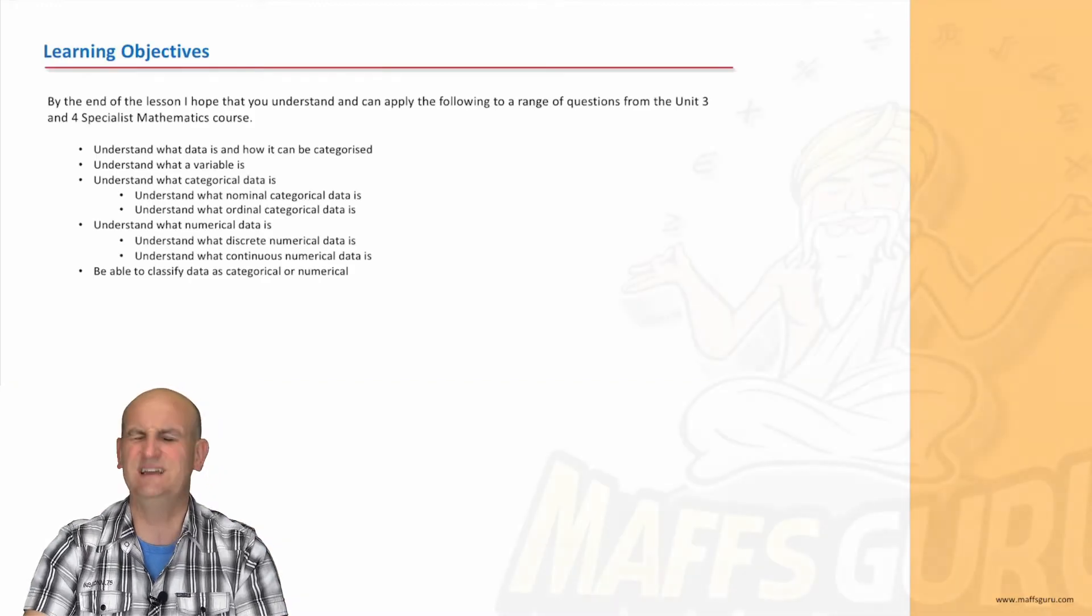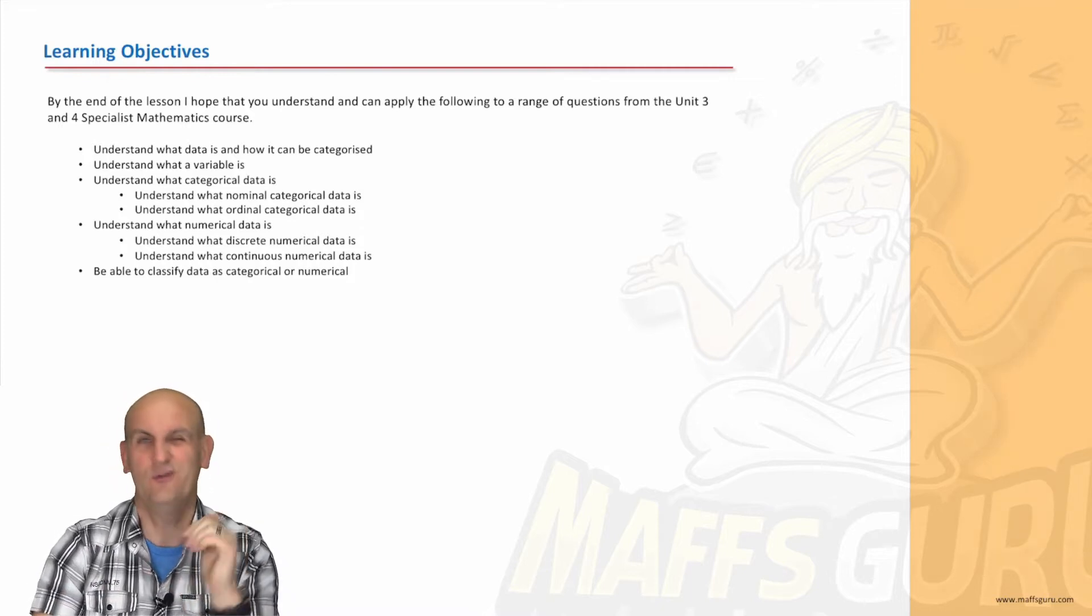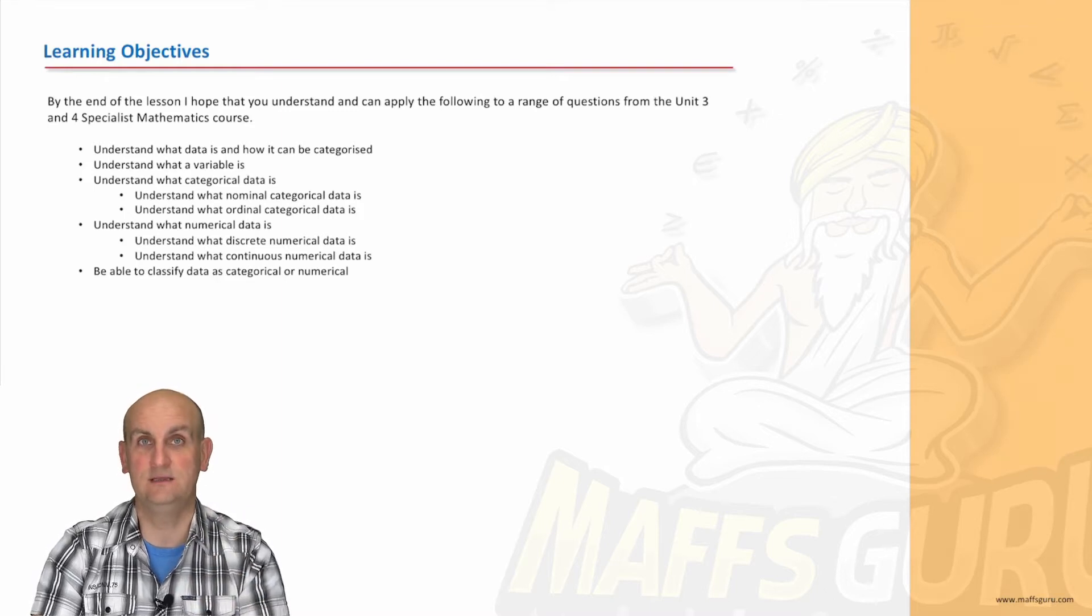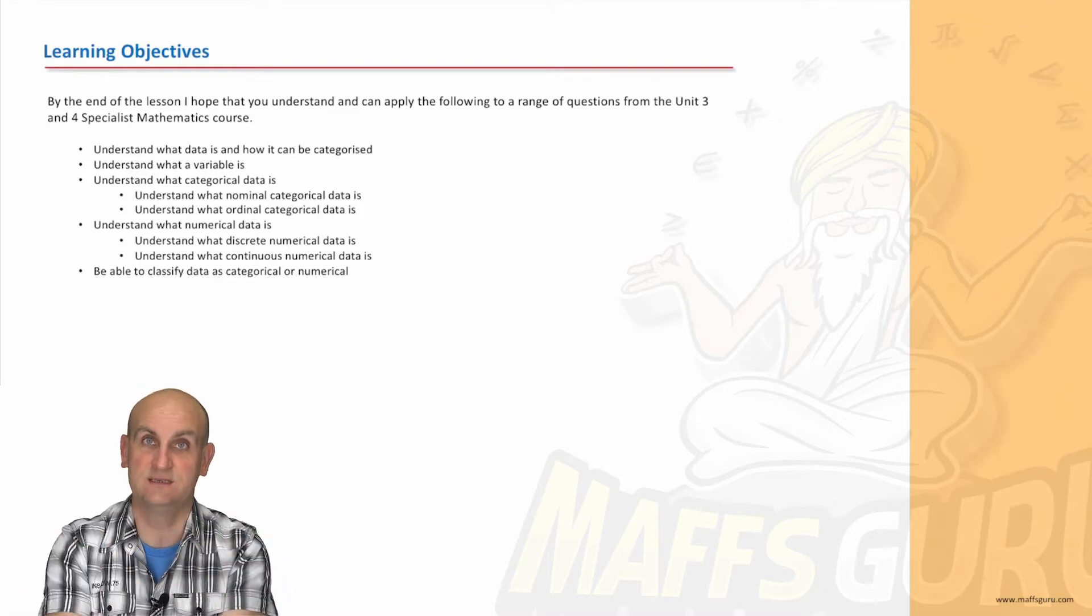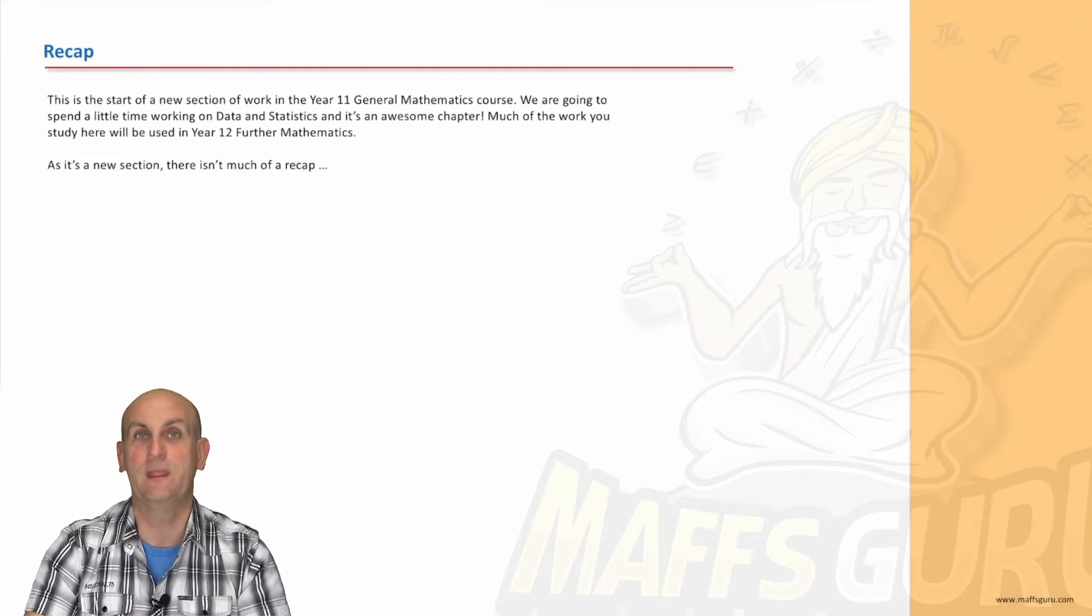What are we doing today? Our learning objective is to understand what data is and how it can be categorized. We're going to look at what a variable is and also a constant, and then the idea of what categorical data is and what numerical data is as well. And each of those can be then subdivided. Sound confusing? Promise you it really, really isn't.